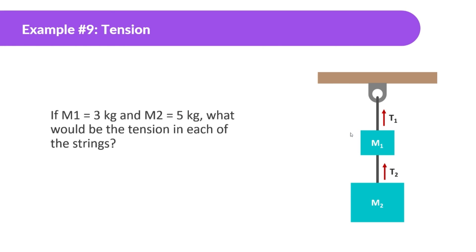Next example: if m1 equals 3 kilograms and m2 equals 5 kilograms, what will be the tension in each of the strings? Let's start with finding the tension in string 2. The weight of the second box is pulling it down — m2 is 5 times 10, which is 50 newtons. The string is holding it up, so the force of tension in string 2 is 50 newtons.